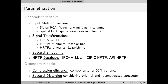Here we present the independent and dependent variables that we used. First, we experimented with the input matrix structure. In particular, we used two different structures: what we call signal principal component analysis and spatial principal component analysis. The first uses frequency or time bins as variables in the matrix columns, and the second uses spatial directions as variables in the matrix columns.